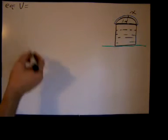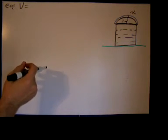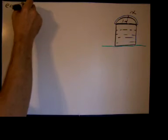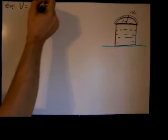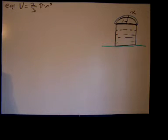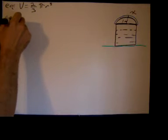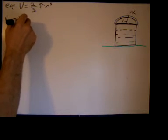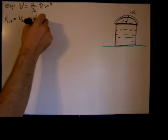The volume of a sphere is four-thirds pi r cubed. So the volume of the hemisphere is two-thirds pi r cubed. Now we want to make this more specific to this problem. We want the volume of this layer of ice, and the volume of the ice will equal the volume of the outer hemisphere minus the volume of the inner hemisphere.